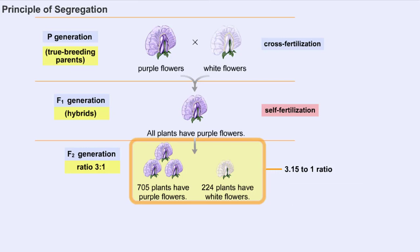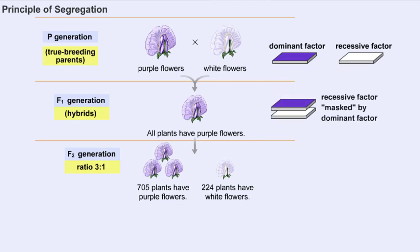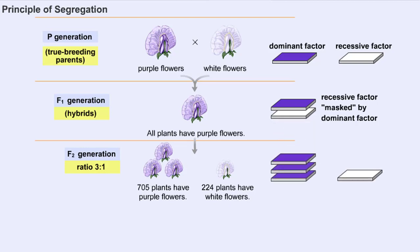This quantitative approach to experimentation allowed Mendel to deduce his second principle, the principle of segregation. Mendel reasoned that there must be a purple color factor that masks or dominates the white color factor in the F1 progeny, but that the recessive white color factor is still present in the F1 progeny and becomes separated or segregated from the dominant factor when F2 offspring are produced.